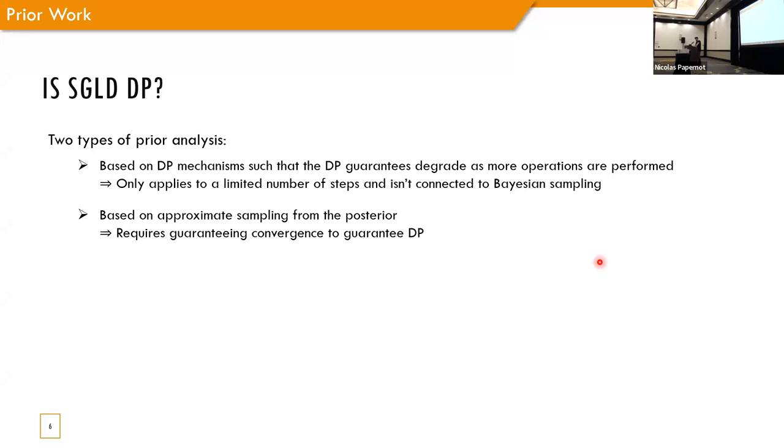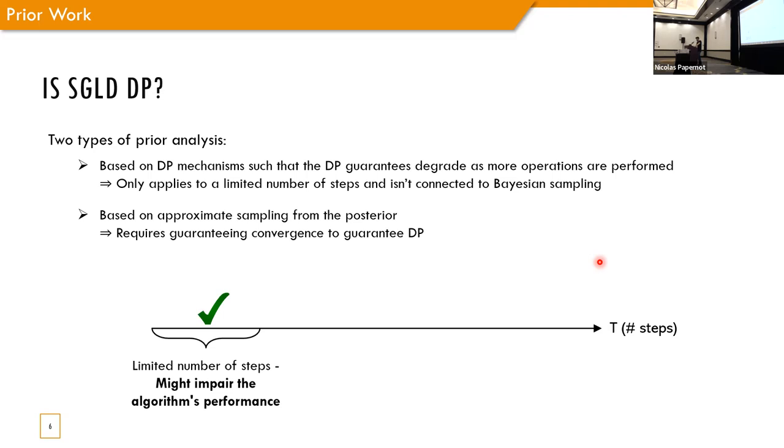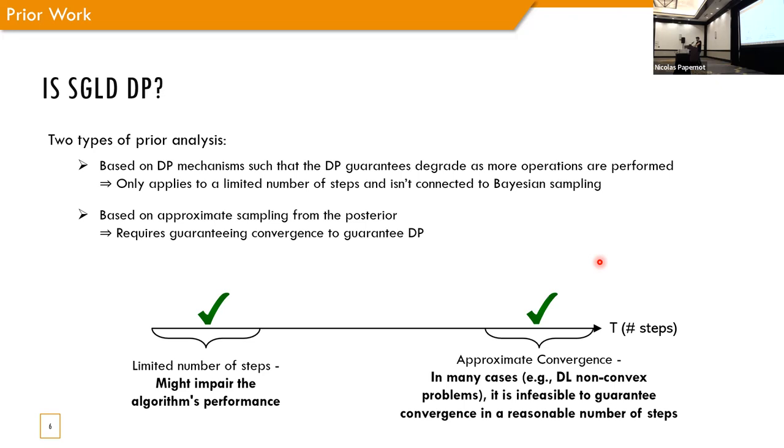So, we ask ourselves, is SGLD really differentially private? Well, prior work showed two types of analysis. First, it's based on differential privacy mechanism, such that the differential privacy guarantees degrade as more operations are performed. Therefore, this analysis only applies for a limited number of steps. And note that by limiting the number of steps, you also might impair the algorithm performance.